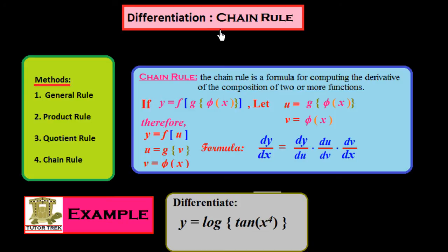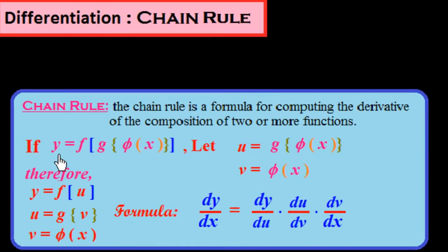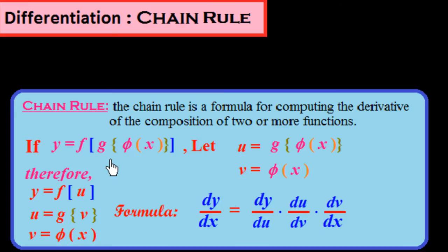There are two sub-functions in a function. So y is equal to f of g of phi of x. Here you see there are three functions: one is f, another is g, and the third one is phi. We have to differentiate this y with respect to x.